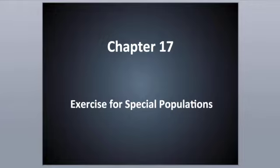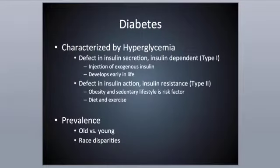All right, exercise for special populations. Let's first look at diabetes. Individuals who have diabetes are characterized by hyperglycemia — an increase in glucose in the bloodstream, so high blood sugar — and this can occur in one of two ways, which is where we get into the different types: Type 1 and Type 2.